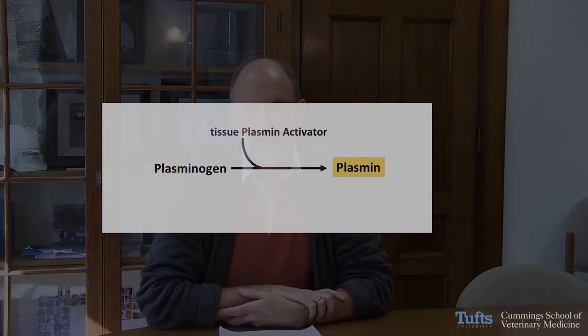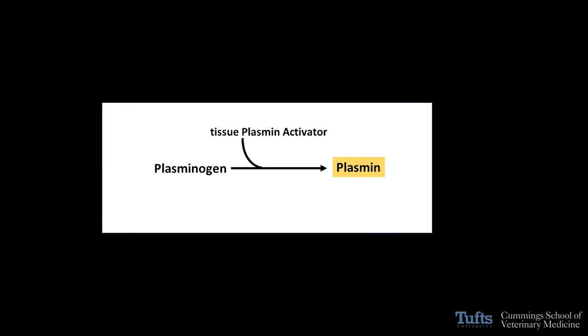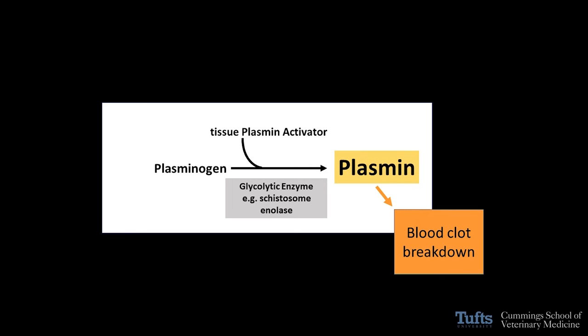To reflect on an assay commonly used in these studies: the blood clot lysis protein plasmin is generated from its precursor plasminogen. Tissue plasminogen activator acts on plasminogen to convert it into plasmin, which degrades fibrin and thereby degrades blood clots. It transpires that in a number of examples — including some schistosome examples — where glycolytic enzymes are tested, the process of plasmin generation is accelerated in their presence. So by promoting the generation of plasmin, these enzymes promote the dissolution of forming blood clots, which could be advantageous for schistosomes.